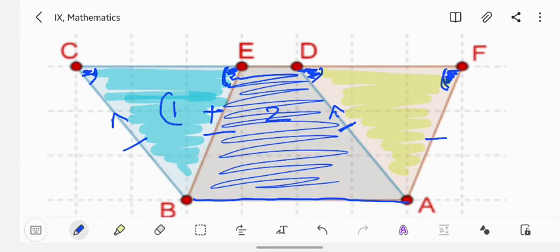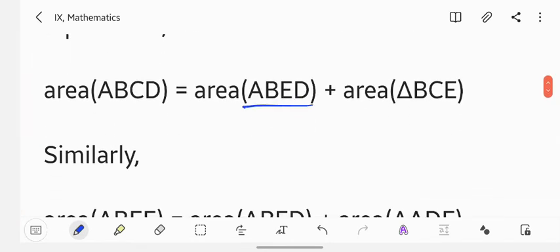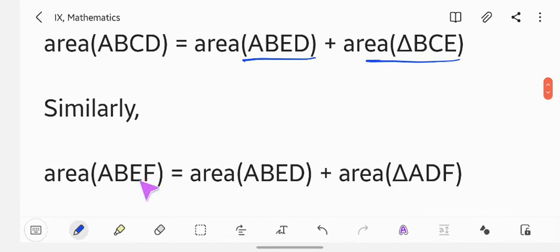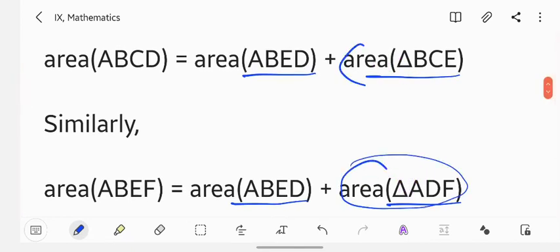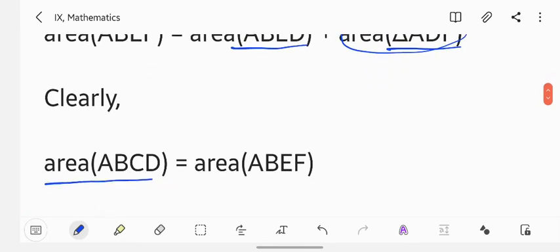This particular addition of these two figures will give you the entire area. However, triangle one area equals triangle three area. So we just replace one with three. So what we get is area of parallelogram ABEF. ABED plus BCE. Similarly, ABEF is nothing but ABED plus ADF, but ADF area is equals to area of BCE. Hence we can say that area of parallelogram ABCD is equals to area of parallelogram ABEF.